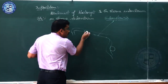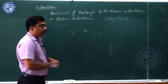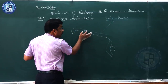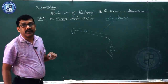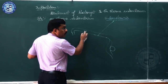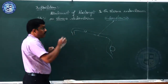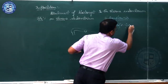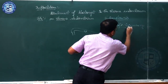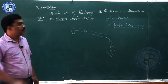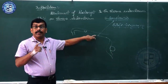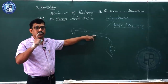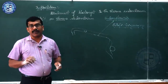The chorionic villi get dipped in the pool of blood from the endometrium to draw nourishment. This process — the attachment of the blastocyst to the uterine endometrium — is called implantation. Implantation takes three days, so it is completed by the 10th day after fertilization.